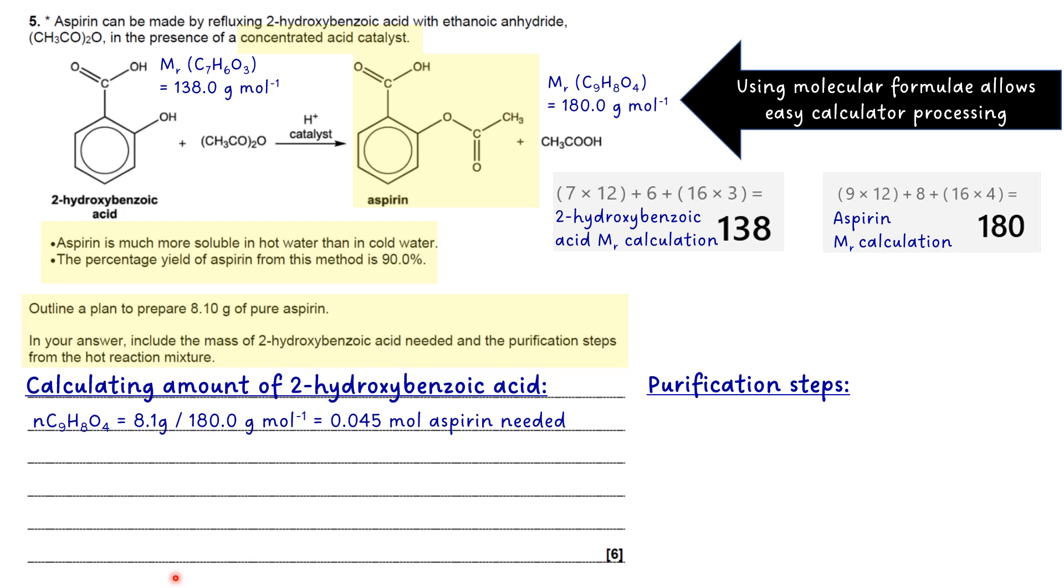So what I want is the number of moles of aspirin that are in 8.1 grams. I take 8.1 and divide it by the MR to get 0.045. Then I multiply that by my scaling factor that I mentioned earlier. Now if I had 90 over 100, that's going to scale it down. I want to scale it up because I've got less than 100% yield. So I need more moles of hydroxybenzoic acid than I have in my 8.1 grams of pure aspirin, and I need more moles because I have to cater for the fact that there's a less than 100% yield. So what you do is you take the percentage and put it underneath 100 and multiply your number of moles of product by that. So that gives me 0.05. You can see that I want to use 0.05 moles of 2-hydroxybenzoic acid, slightly more in other words.